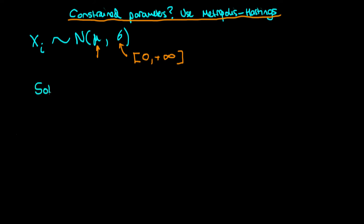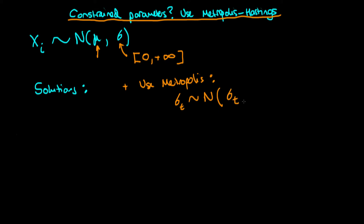So the question is, what should we do in this circumstance? The first thing we could try would be to use the standard Metropolis algorithm. In each step, we would generate a proposed value of sigma — call it sigma_t' — by drawing from, say, a normal distribution centered on our current position sigma_{t-1}. This proposal density has some step size that you need to choose. If we use this algorithm, we would naturally reject any sigma_t' that is less than zero, because the probability density of sigma being less than zero is zero.